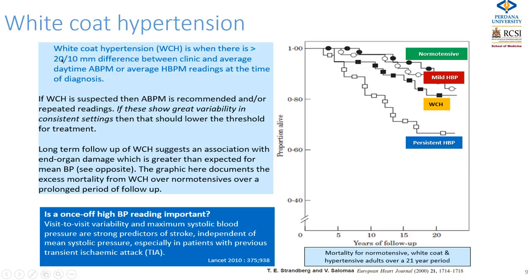What about white coat hypertension — is this important? It's very common. It was thought to be due to stress and anxiety, but it isn't just that. It seems to be related to the mere fact of somebody else putting a cuff on your arm, which causes changes in markers such as cortisol and adrenaline. It appears not totally benign — it's somewhere between normal tension and hypertension in terms of lifelong risk.